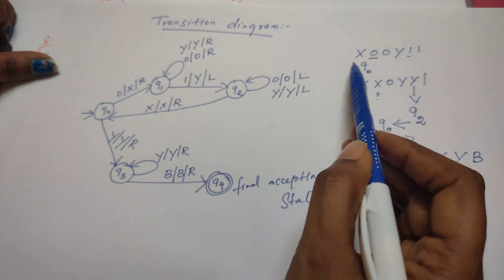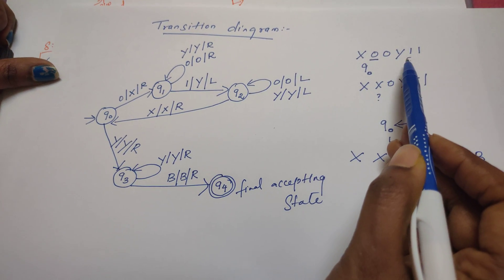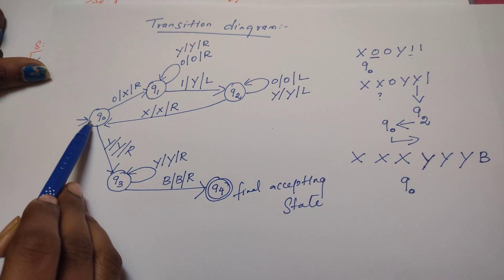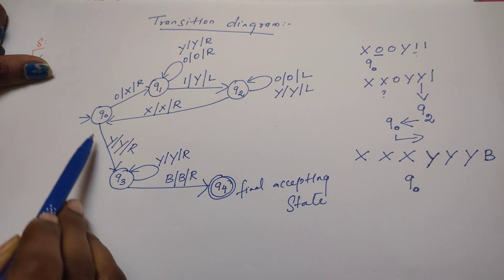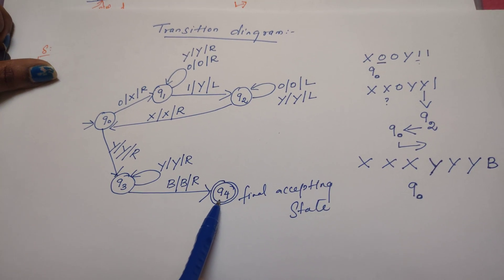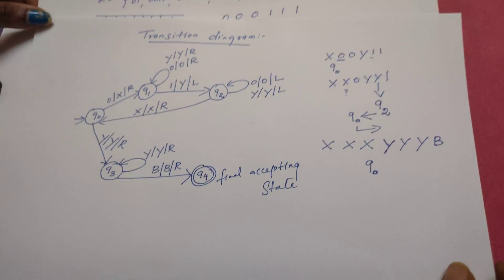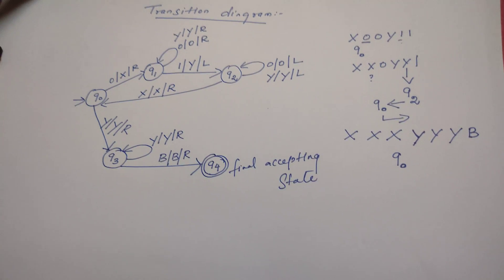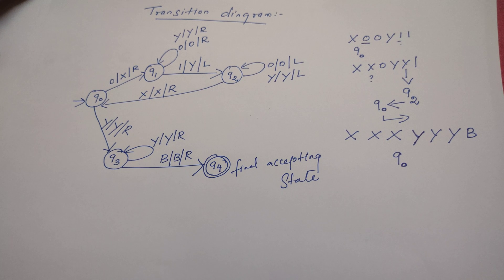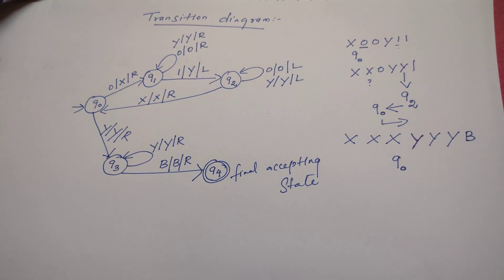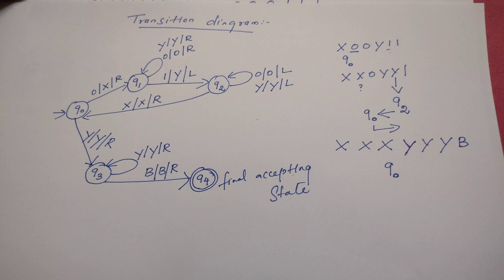To summarize the logic: every zero is replaced by x and every one is replaced by y alternately. At one point there are no zeros left and the machine reads only y's. When there are no zeros there should be no ones either, which the machine confirms before reaching the final state q4. If it reaches q4, the given string belongs to the language. This completes the Turing machine design for L = 0^n 1^n. Please like, share, and subscribe, and comment any problems you'd like solved.